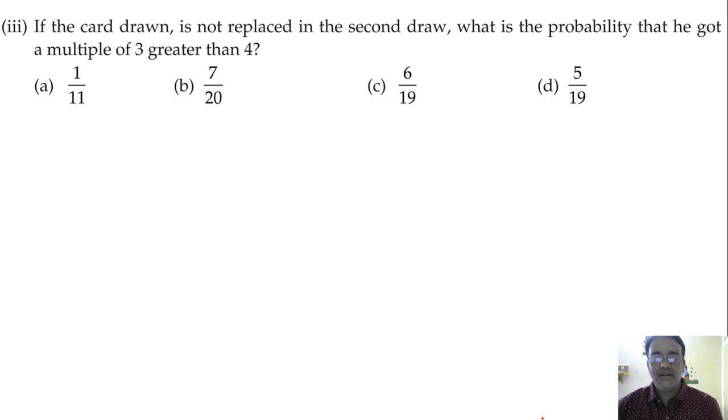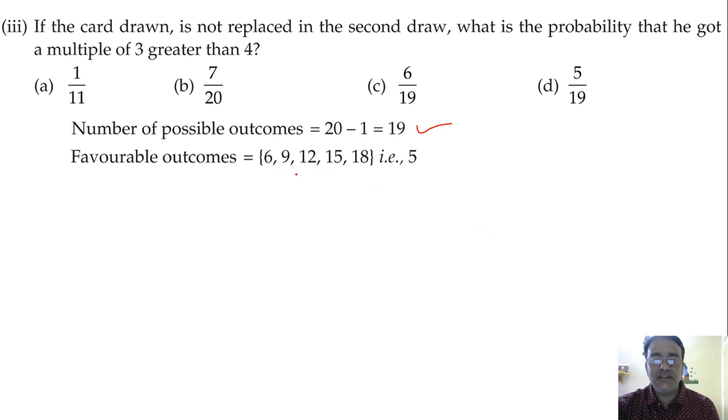I repeat once again: 6, 9, 12, 15, 18. 5. 5 by 19, because the total number of possible outcomes is 19. And the favorable outcomes are 6, 9, 12, 15, 18, that is 5. So therefore the required probability is 5 by 19. So correct option is option D.